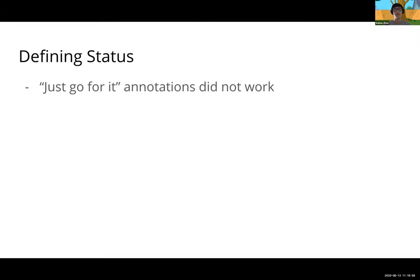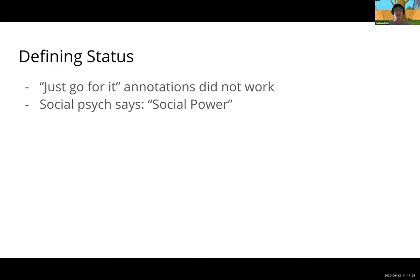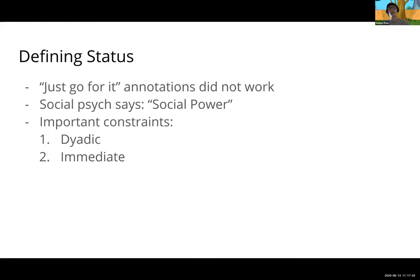The next step was defining status. We first tried broadly annotating a handful of dialogue pairs to see if we got any agreement — maybe annotators already intuitively know what status is. That didn't work very well; we got a Cohen's kappa of 0.2, which is not very high. So we went back into theory and looked at social psych — there's the concept of social power, which is relevant to status, but we wanted to be more specific. We care about dyadic interactions between two people only, and about immediate power located in a single interaction.